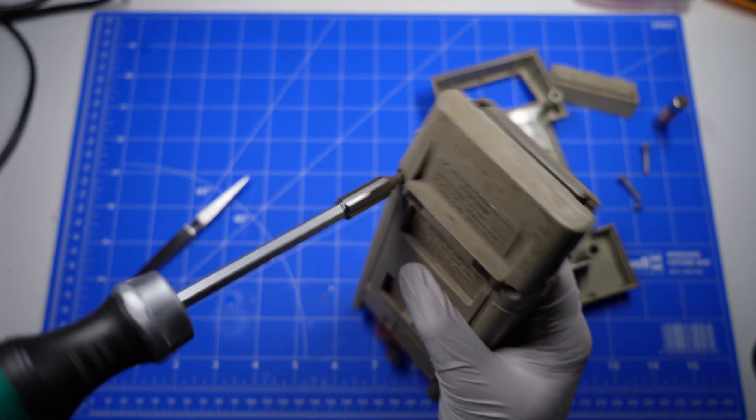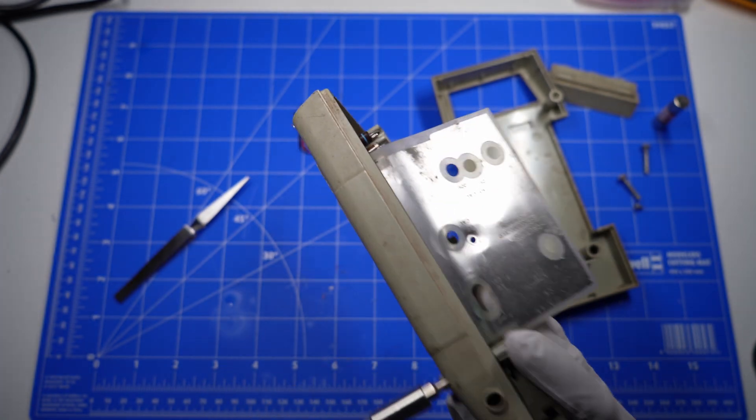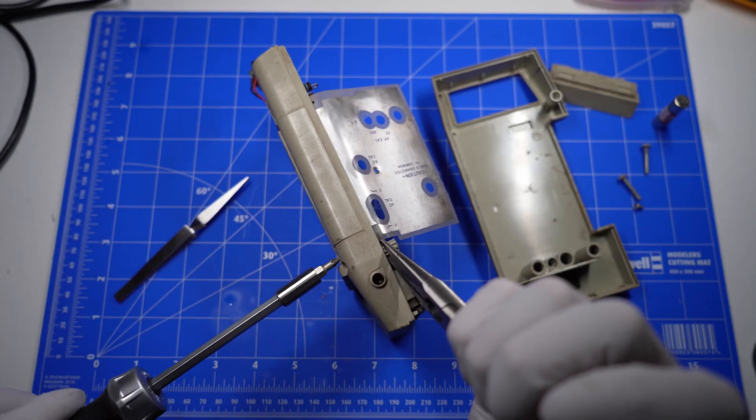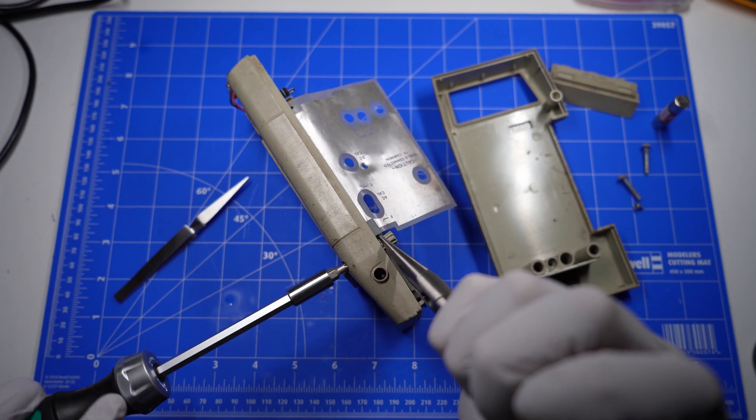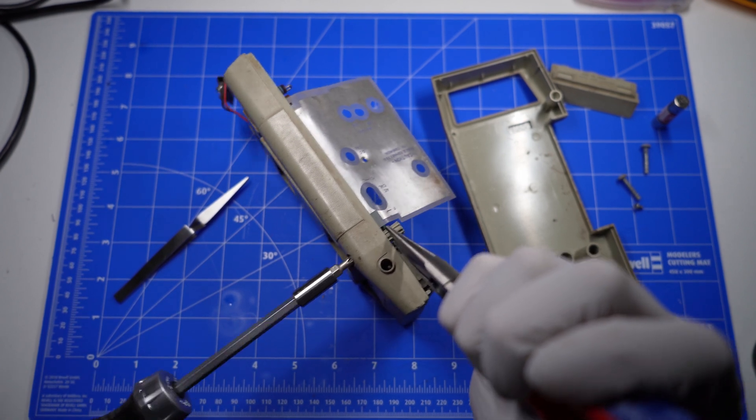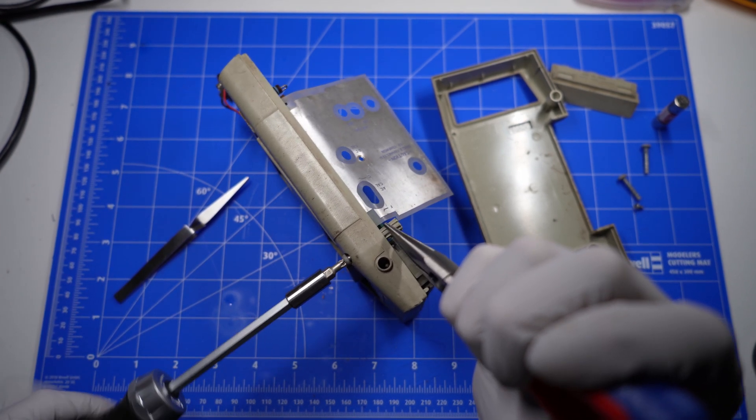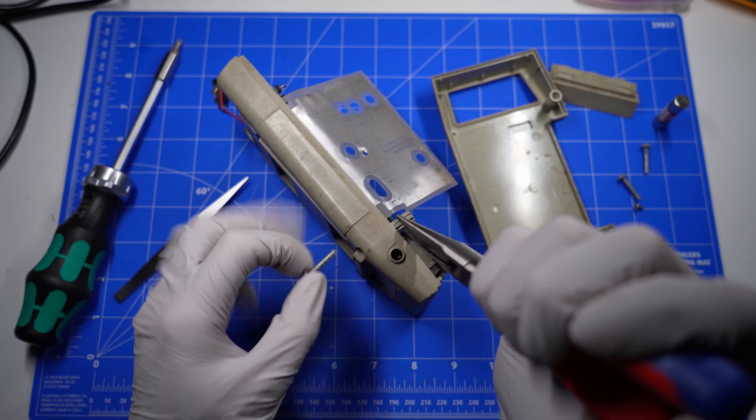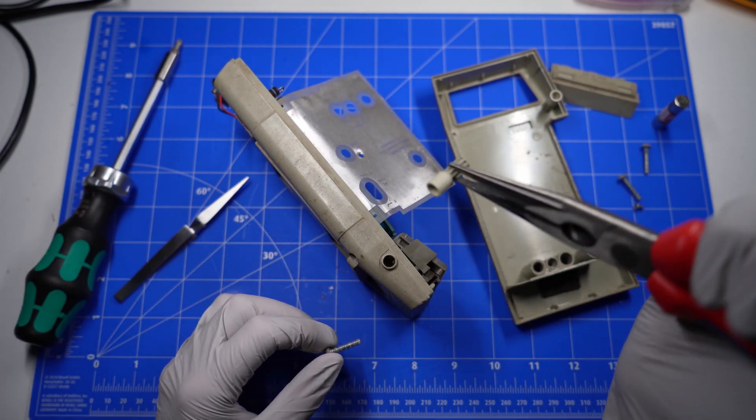Now this screw is stuck in the screw post which has become detached from the front of the case. So I'm having to hold it down with a bit of pliers and just bring the screw out. And there we go. Gonna have to glue this back in place later.